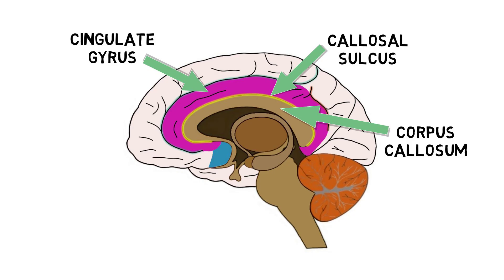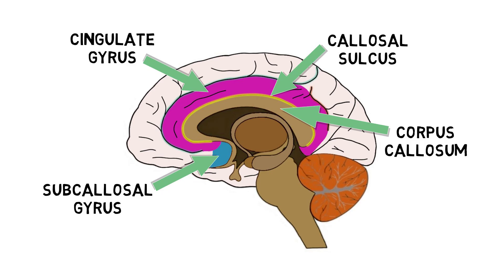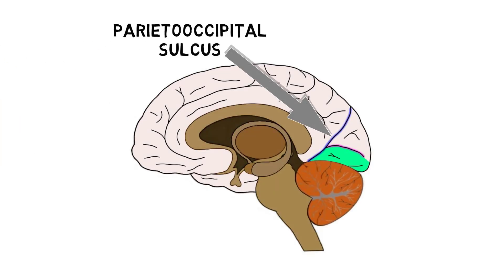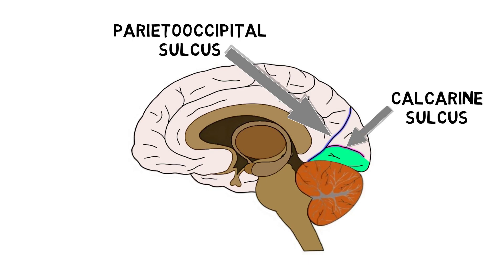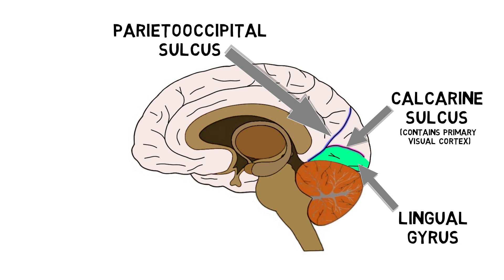Just below the anterior end of the corpus callosum is a gyrus called the subcallosal gyrus. The parieto-occipital sulcus forms a boundary between the occipital and parietal lobes. The calcarine sulcus is found in the occipital lobe, and the primary visual cortex, the main area for the initial processing of visual information, is contained in the walls of the calcarine sulcus and in the cortex surrounding it. Just below the calcarine sulcus is the lingual gyrus, an area also involved with visual processing.